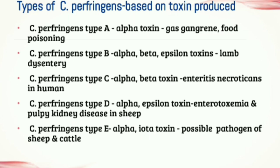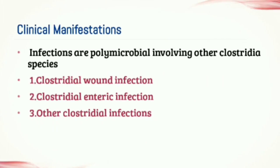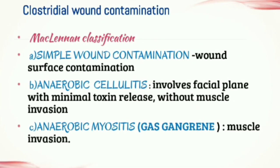When discussing clinical manifestations, we'll cover three main headings: first, Clostridial wound infection; second, Clostridial enteric infection; and third, other Clostridial infections. McLennan has classified Clostridial wound infection into three types: simple wound contamination, anaerobic cellulitis, and anaerobic myositis or gas gangrene.